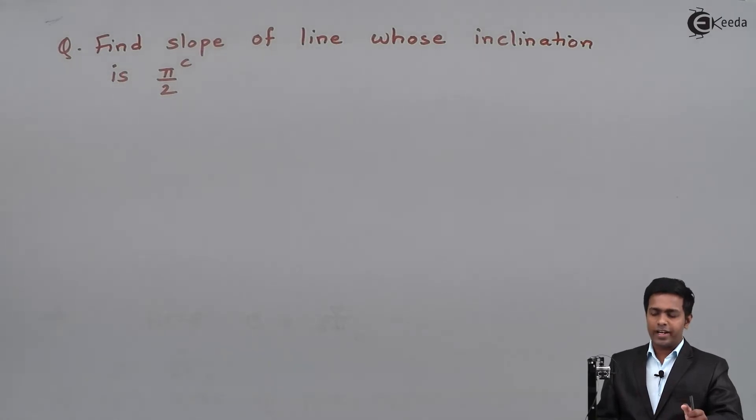To find the slope of a line which is making an inclination of theta with the x-axis, we use the formula m = tan θ.